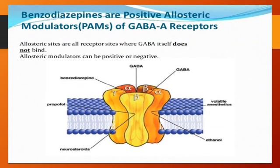Benzodiazepines are positive allosteric modulators of the GABA-A receptor. Allosteric sites are all receptor sites where GABA itself does not bind. Allosteric modulators can be positive or negative. The interface between alpha and beta subunits is the binding site for endogenous GABA, while the interface between the alpha and gamma subunit is the binding site for benzodiazepines, and barbiturates bind on the beta subunit of the GABA-A receptor complex.